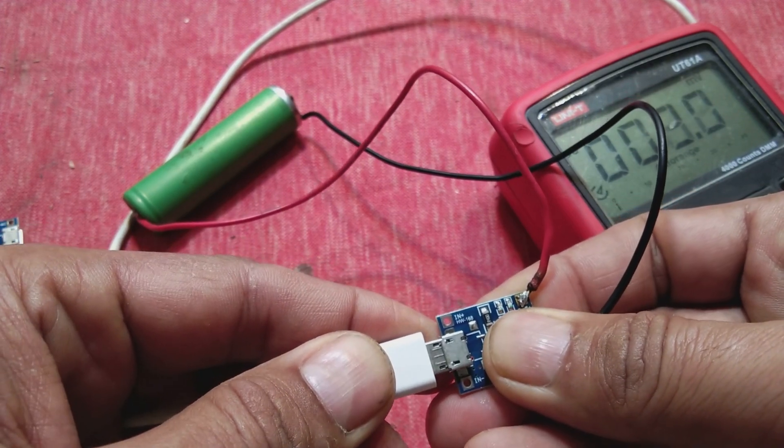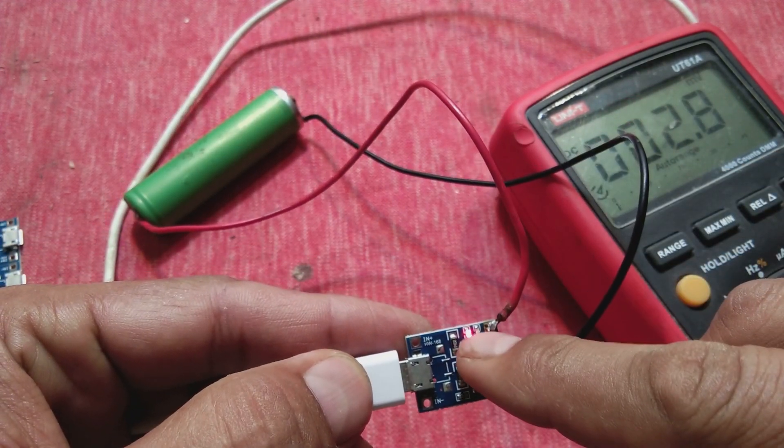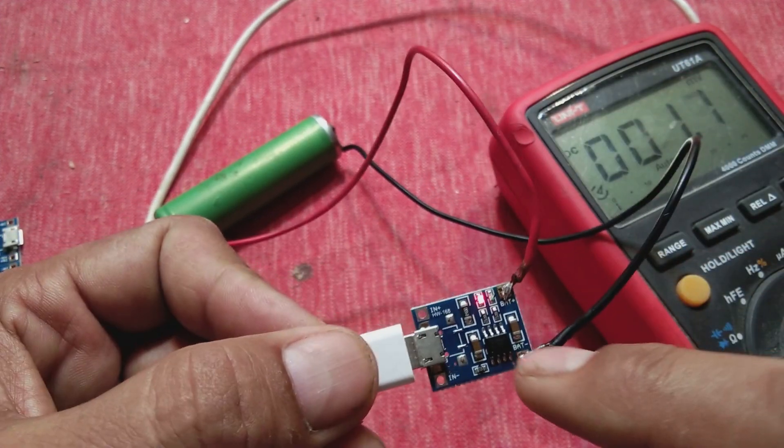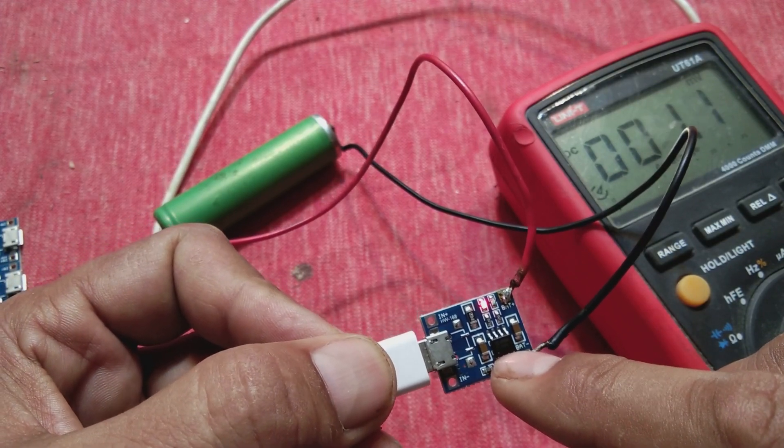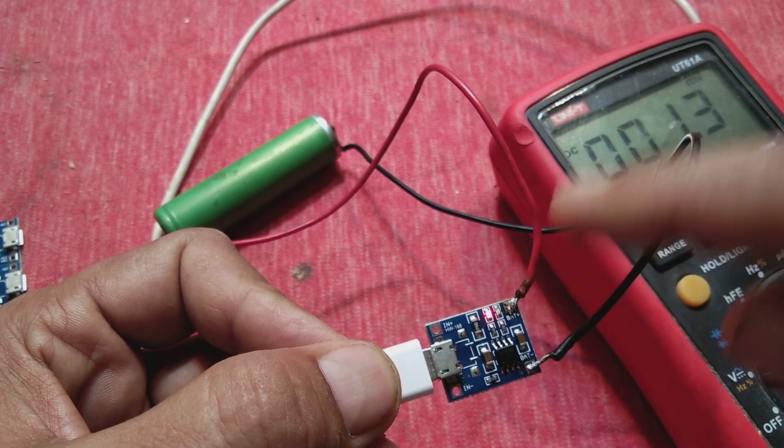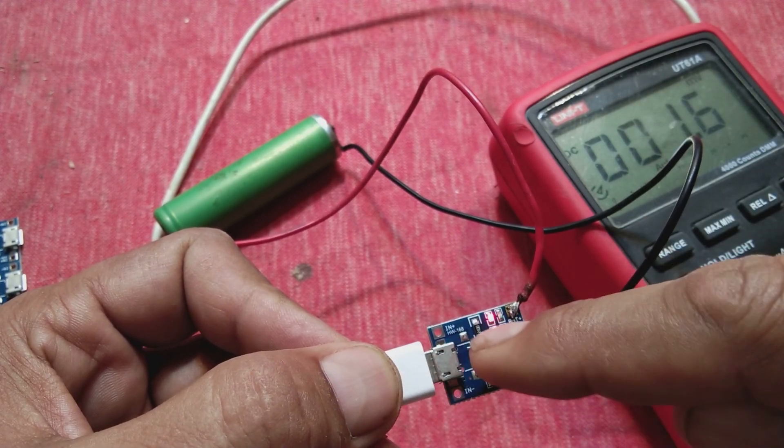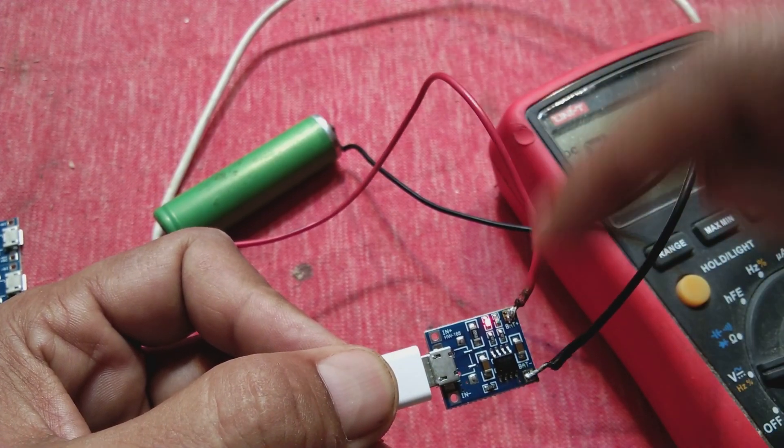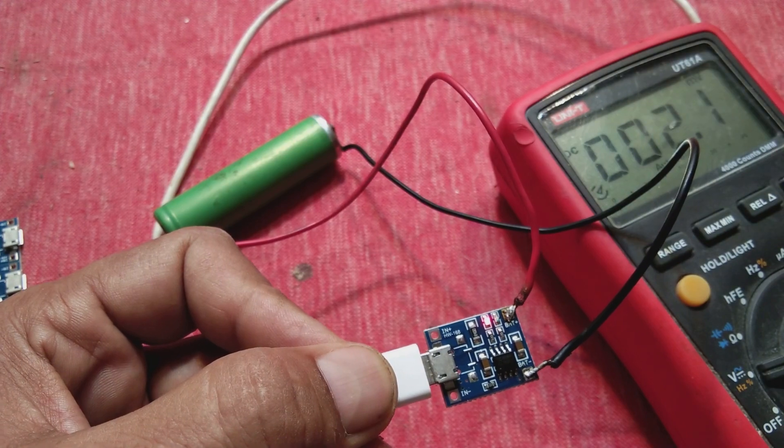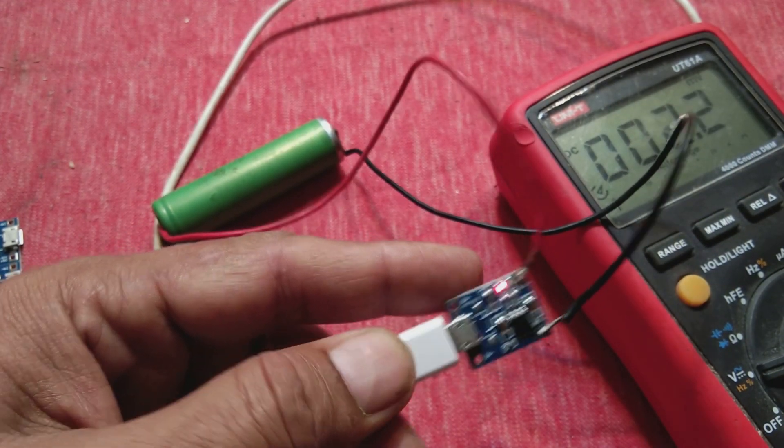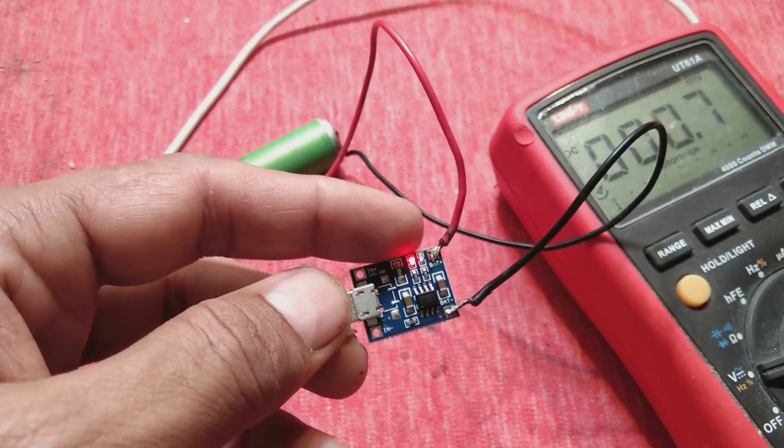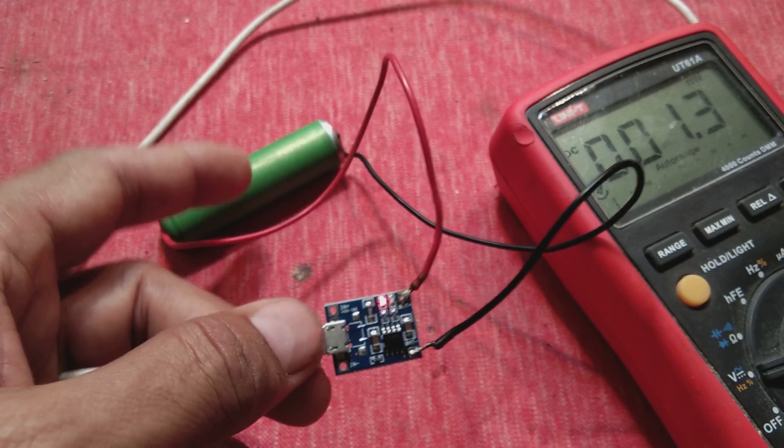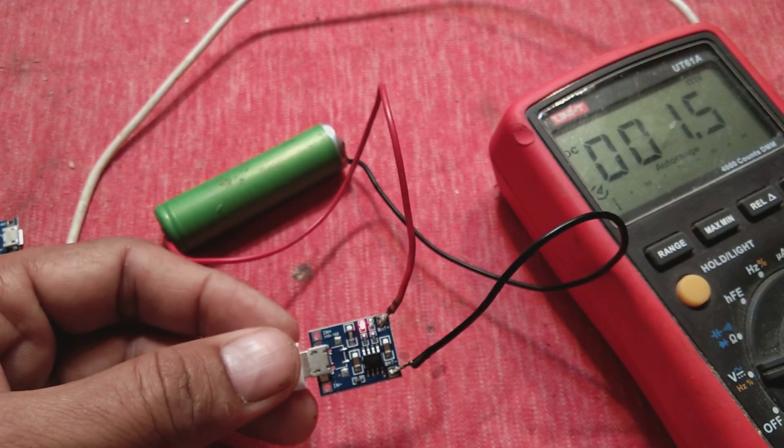Let's connect it. See, this red indication is coming on, showing that the battery is taking charge. The TP4056 IC is providing 1 ampere charging rate. Current comes through the charging port and from the IC goes to the battery. When charging is completed, the indication will change to blue, showing your battery is fully charged and ready to use.